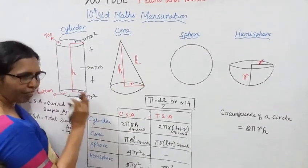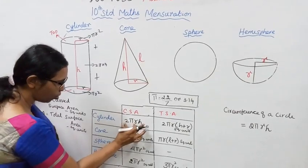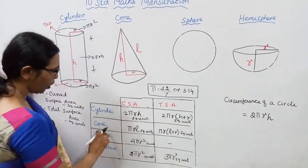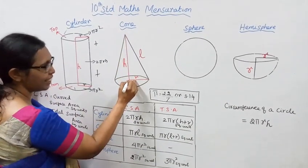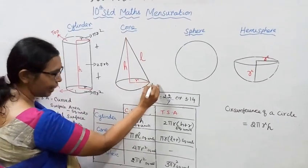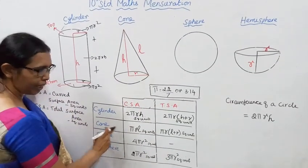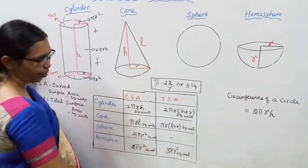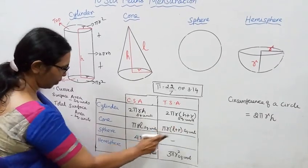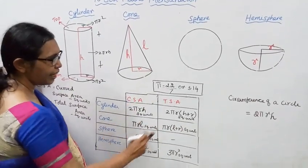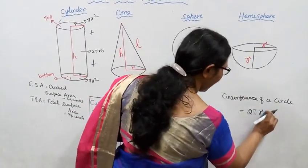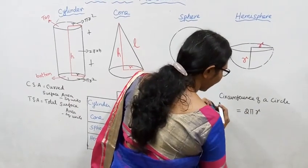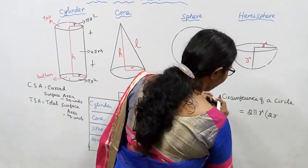So the CSA of a cylinder is 2πrh square units. The TSA of a cylinder is 2πr(h + r). For a cone, with vertical height and slant height, the TSA formula involves πr(l + r). For a sphere, the curved surface area equals 4πr².